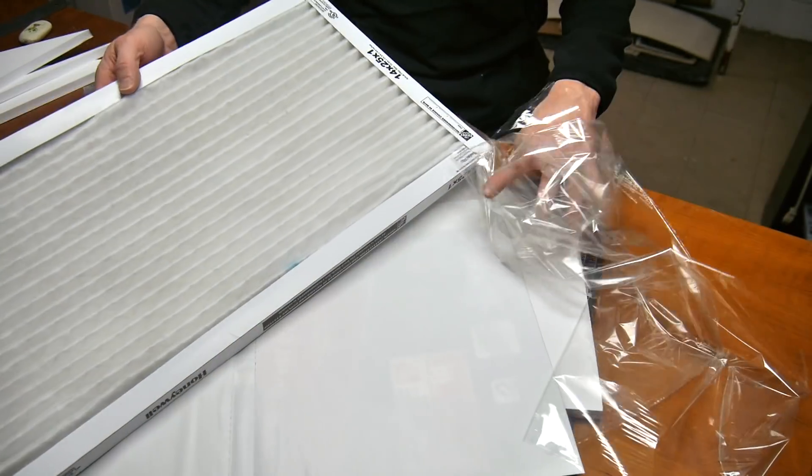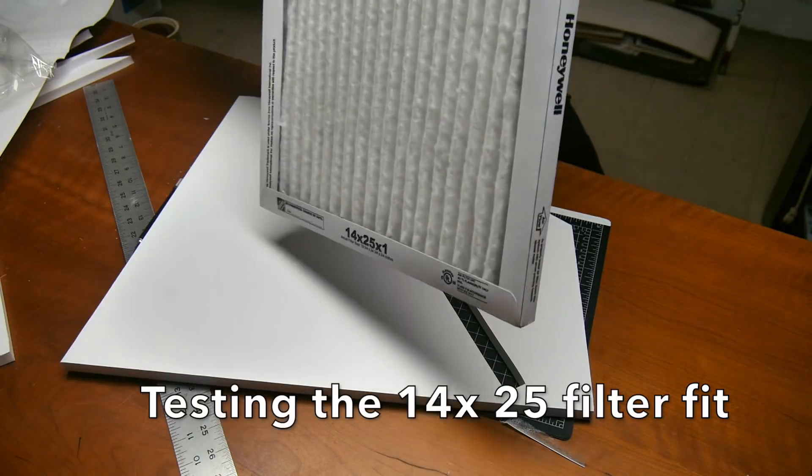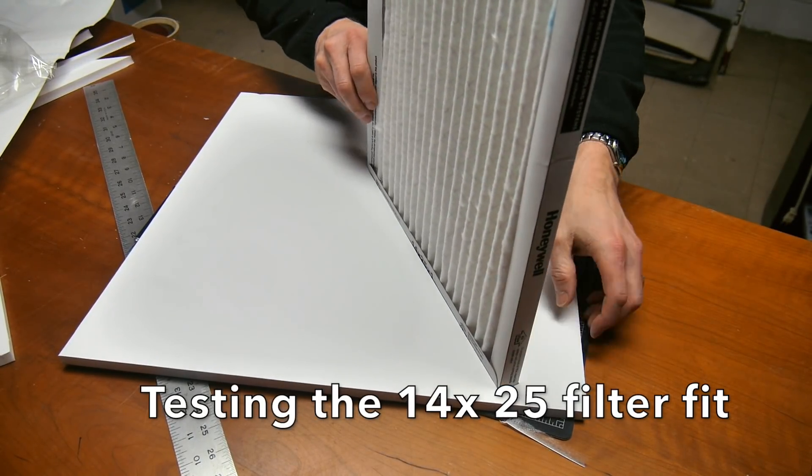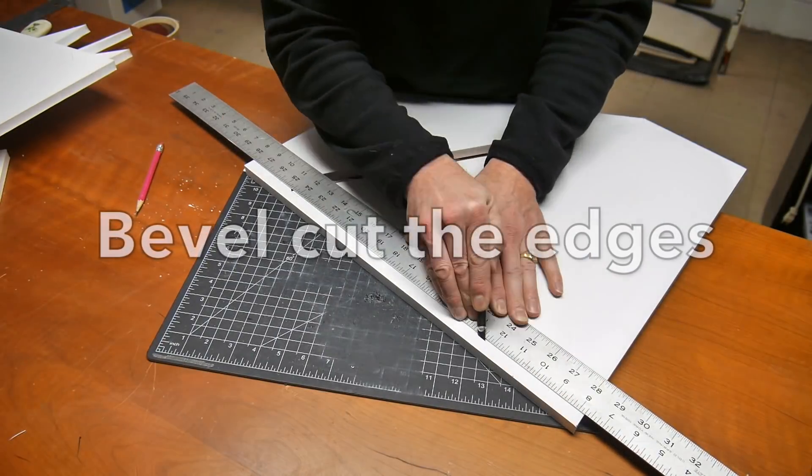In the plans, they show like a kind of a top loader. This makes it super easy to replace the filter at any time. I also used a 14 by 25 filter, which is a different size than what they show in the plans, but it's easy to modify all that stuff.